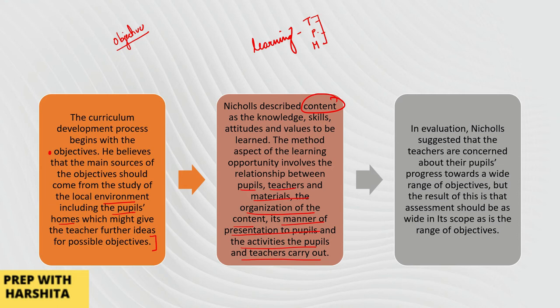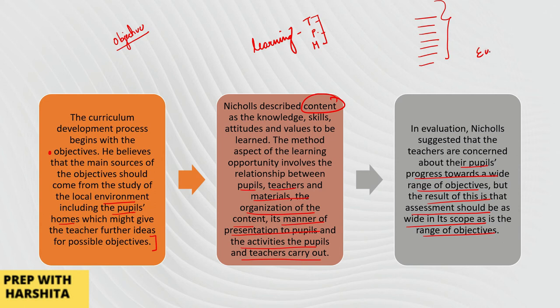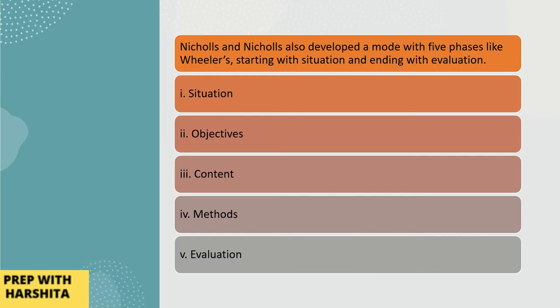Evaluation के बारे में Nicholls ने suggest किया कि teachers हमेशा pupils की progress को लेकर concerned रहते हैं — और जब objectives की range wide हो तो assessment भी उतनी ही wide होनी चाहिए। एक छोटा-सा test काफी नहीं है। उन्होंने situational analysis से start करके, objectives ढूँढना, content organize करना, और finally evaluation — इस पूरे process को describe किया।